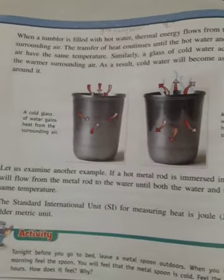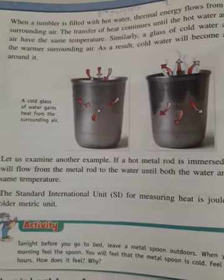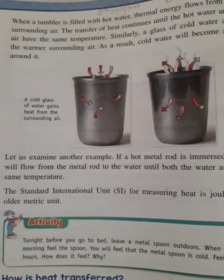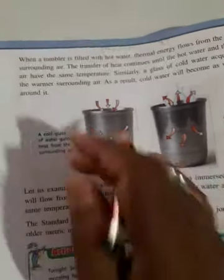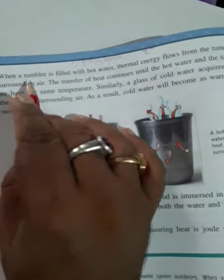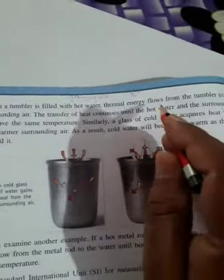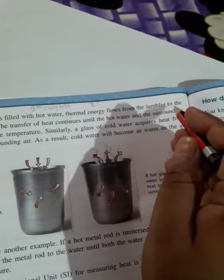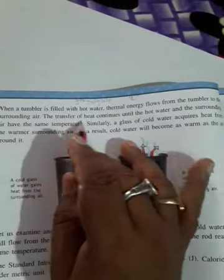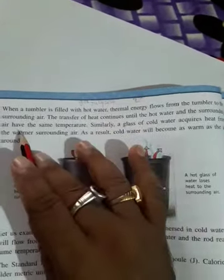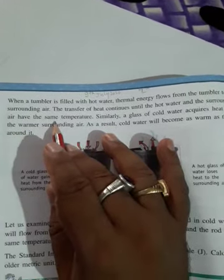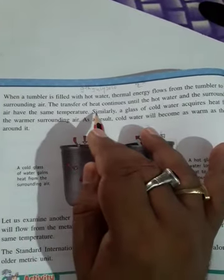Good morning students, Class 7 science. We have discussed when a tumbler is filled with hot water, thermal energy flows from the tumbler to the surrounding air. The transfer of heat continues until the hot water and the surrounding air have the same temperature. Similarly, a glass of cold water acquires heat from the warmer surrounding air.